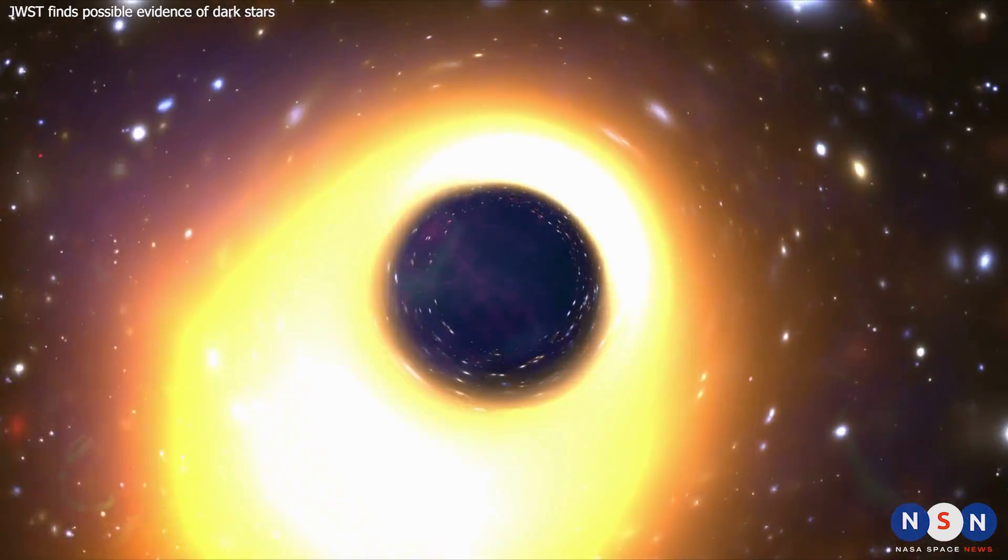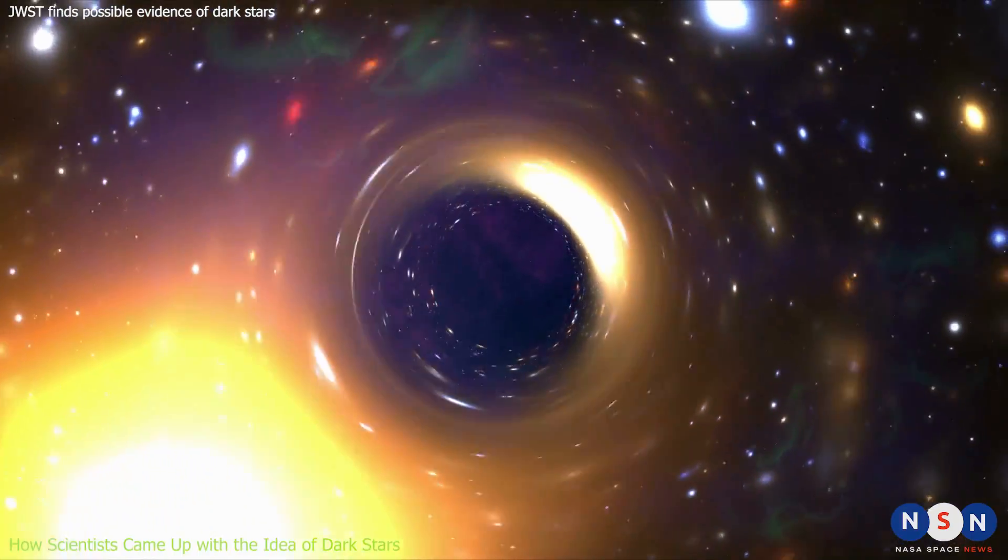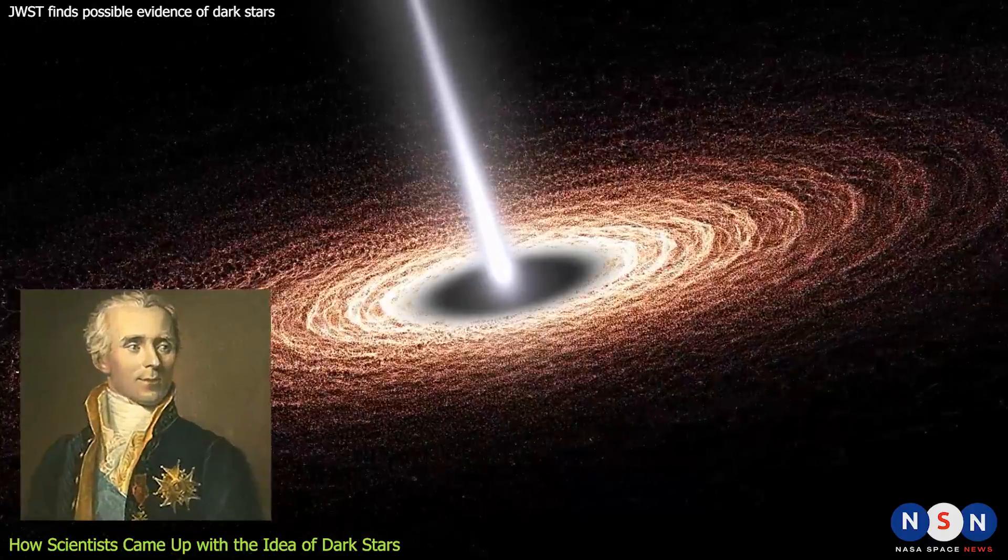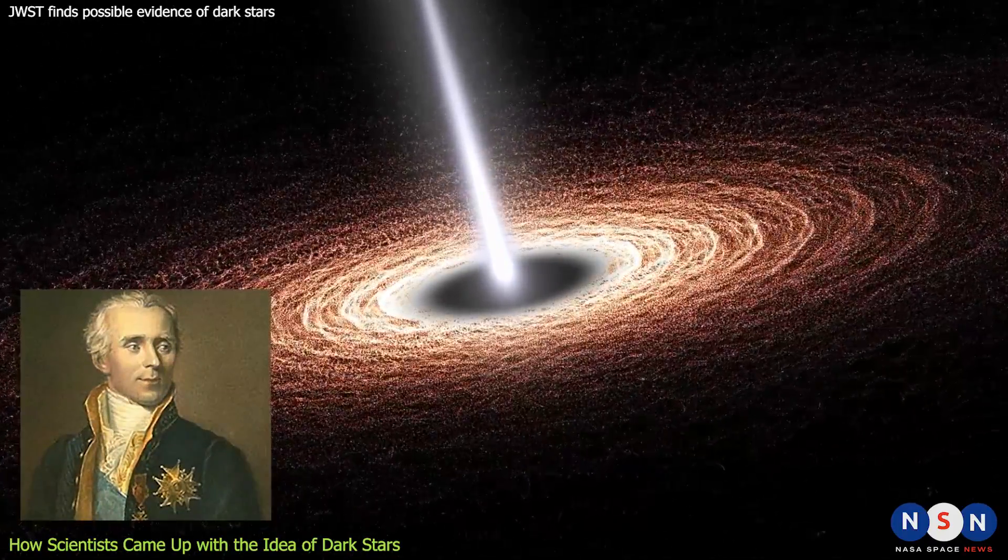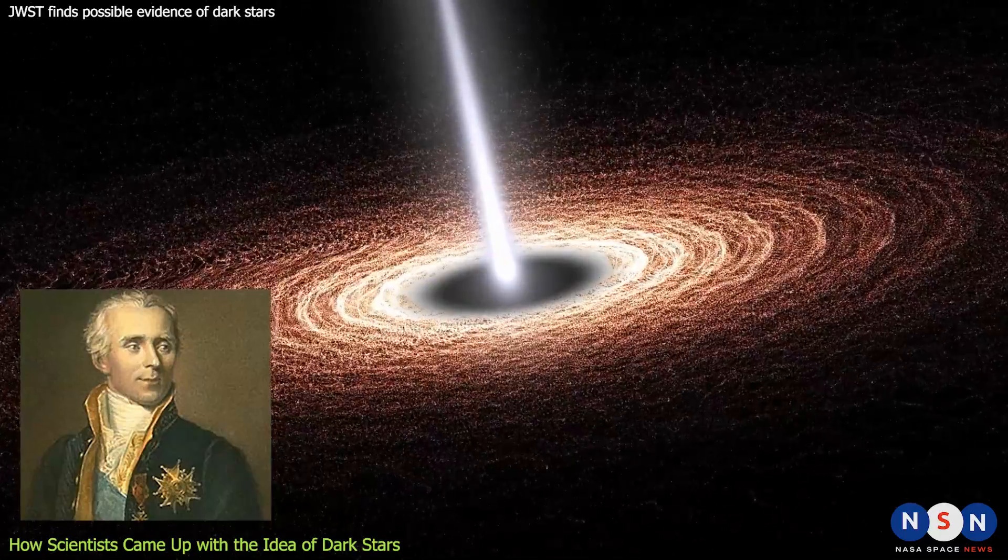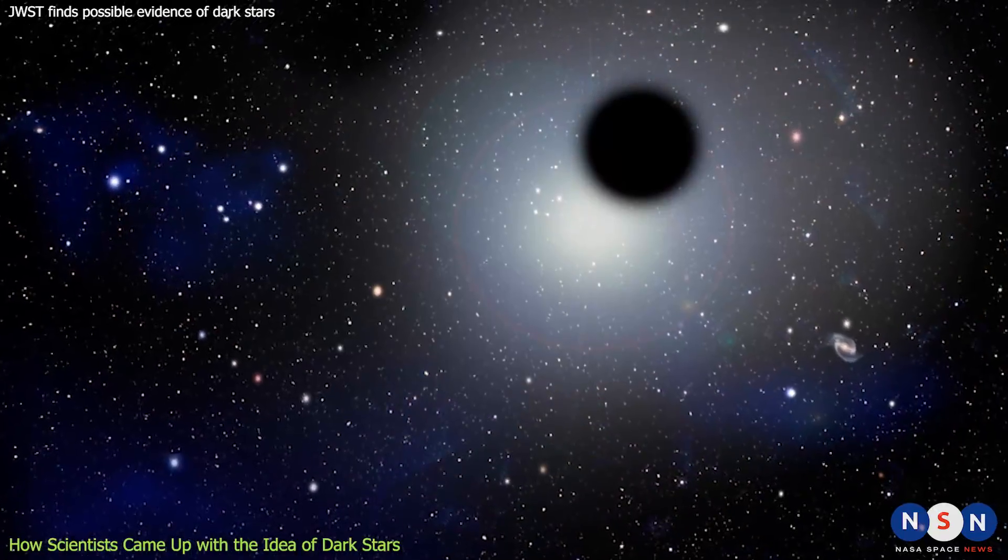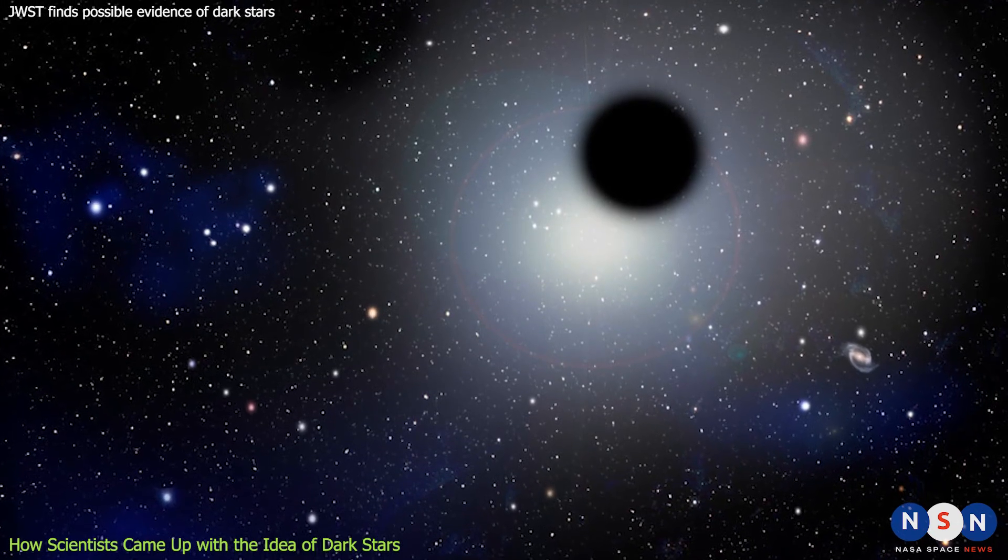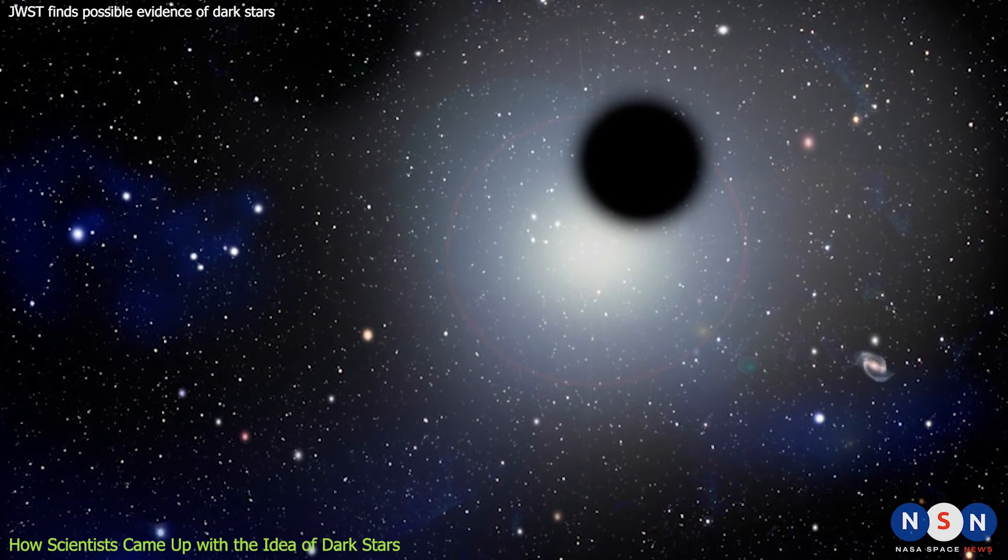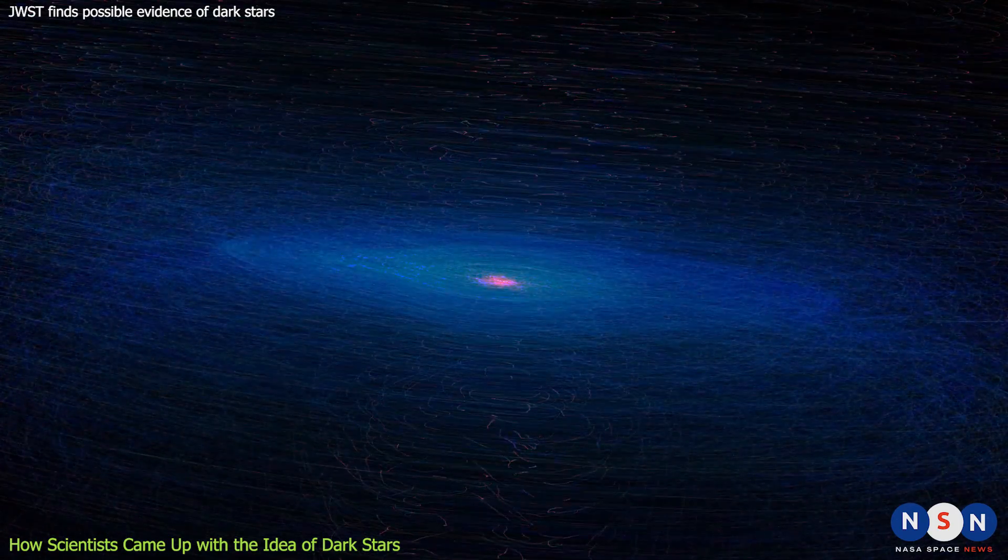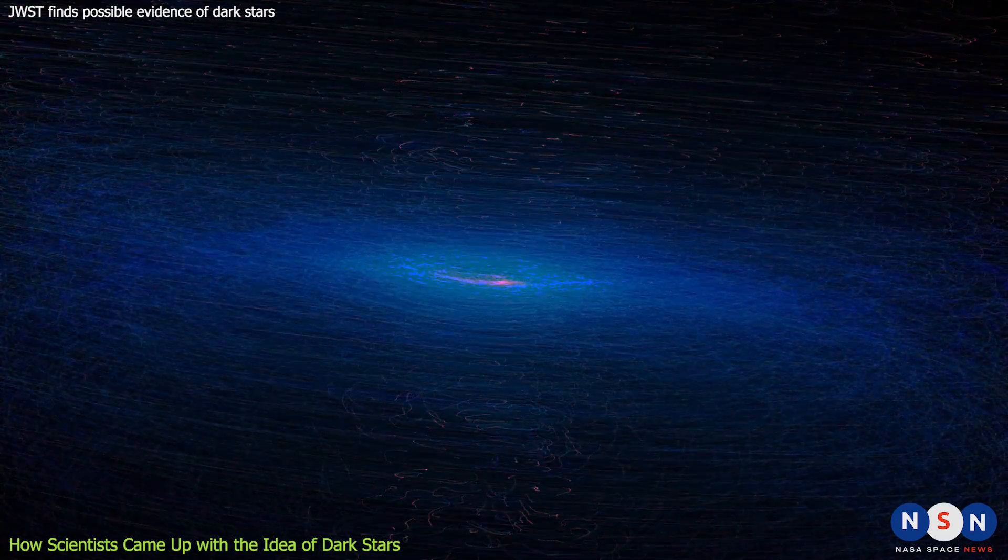The concept of dark stars is not new. In fact, it dates back to the 18th century, when the English astronomer John Michel proposed that there could be stars that are so massive and dense that their gravity would prevent any light from escaping them. He called them dark stars, and he speculated that they could be detected by their gravitational effects on other objects. However, he had no idea how such stars could form or what they would be made of.